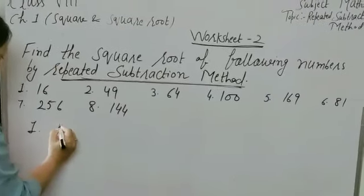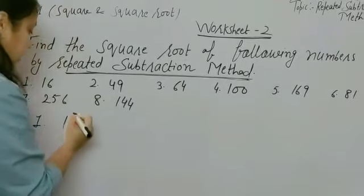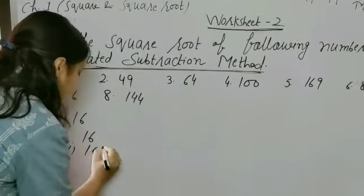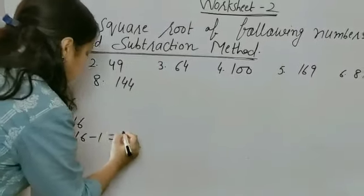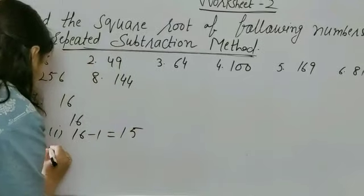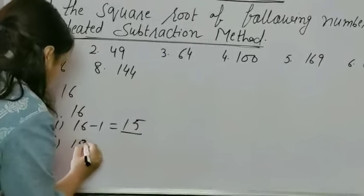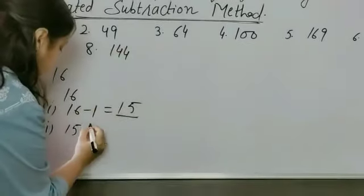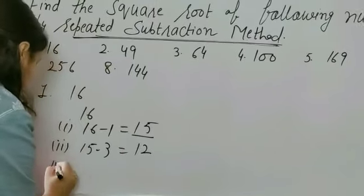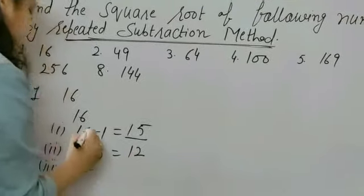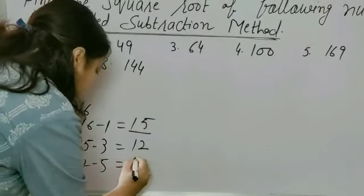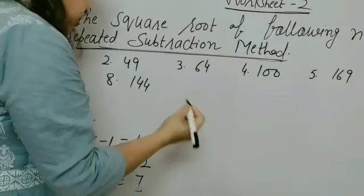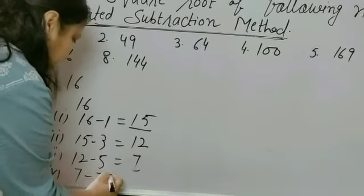First question is 16. First of all, we will write the number 16. First step: we will subtract the first odd natural number from 16. 16 minus 1 is equal to 15. Now, second step: from this 15, we will subtract the next odd natural number, which is 3. 15 minus 3 is equal to 12. Now, from this 12, we will subtract the next odd natural number, which is 5. Answer will be 7. Now, from this 7, we will subtract the next odd natural number, which is also 7. 7 minus 7 is equal to 0.